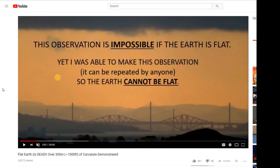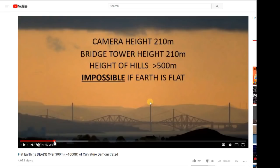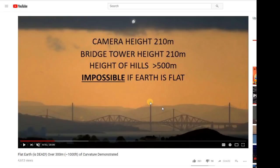Whether that deception is deliberate or accidental, I don't know, but perspective is the main issue here. So let's have a look at what's happened. He's claiming to be at a height equal to the top of the tower on that bridge, which is 210 meters, and that the hills in the background are at least 500 meters tall, so they should appear higher than the top of that tower. Of course, we all know that perspective makes things appear shorter and shorter over distance, so this is a normal view we would see on a flat Earth.